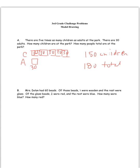So if we said that Mrs. Dolan, who is what we're talking about, talking about her beads, right? And she had 60 of these. So I'm actually going to create this unit bar a little bit bigger. So Mrs. Dolan had 60 beads. Of those beads, one-third were wooden, and the rest were glass. Of the glass beads, one-fourth were red, and the rest were blue. How many were blue? How many were red?